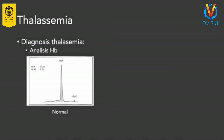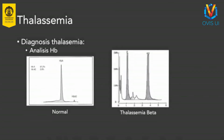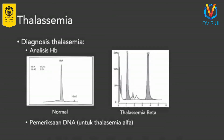Pada elektroforesis Hb atau analisa Hb dapat dilihat jenis hemoglobin yang dominan dalam darah. Pada orang normal, sebagian besar Hb adalah HbA. Pada thalassemia beta, HbA rendah atau tidak terdeteksi dan dapat ditemukan HbF dan HbA2 yang tinggi. Pada thalassemia alpha, hasil elektroforesis Hb sama dengan orang normal. Oleh karena itu, perlu dilakukan pemeriksaan gen thalassemia alpha untuk mendiagnosis ada tidaknya thalassemia alpha. Pada kondisi kombinasi antara anemia defisiensi besi dan thalassemia, pemeriksaan analisa Hb dilakukan setelah kadar feritin normal dengan kondisi anemia mikrositik.